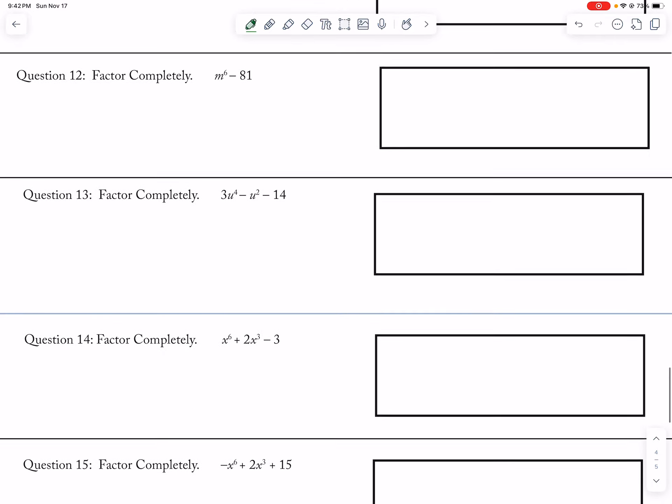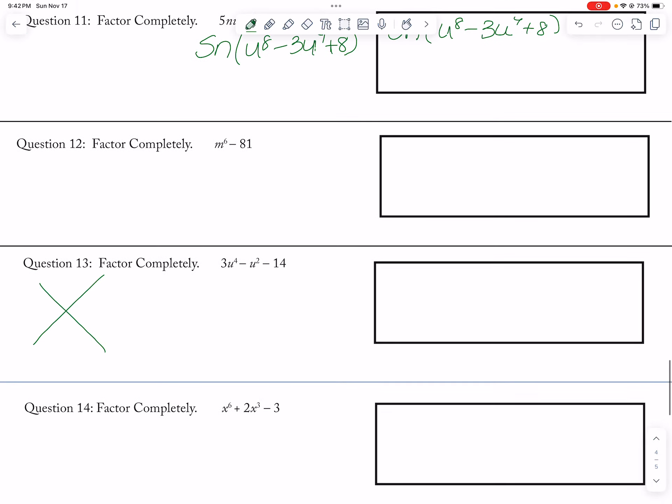Alright, and then 14, so that is 42 negative and then negative 1, so negative 7 and positive 6. So u squared minus 7 over 3, u squared plus 6 over 3. So then this is 3, u squared minus 7, and then u squared plus 2.